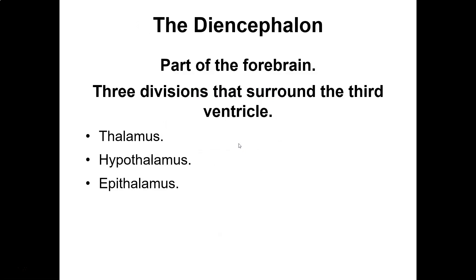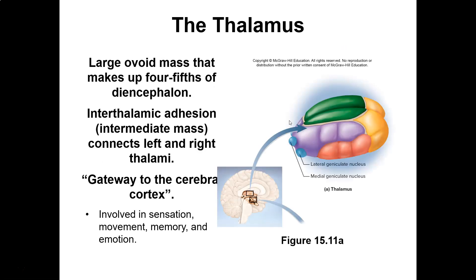The diencephalon has three parts: thalamus, hypothalamus, and epithalamus. The thalamus is a large ovoid mass making up four-fifths of the diencephalon. It is the gateway to the cerebral cortex, involved in sensation, movement, memory, and emotion. I like to call the thalamus the airport or railway station — all sensory and motor information passes through it, and the thalamus distributes it within the brain. It's a very important relay center.